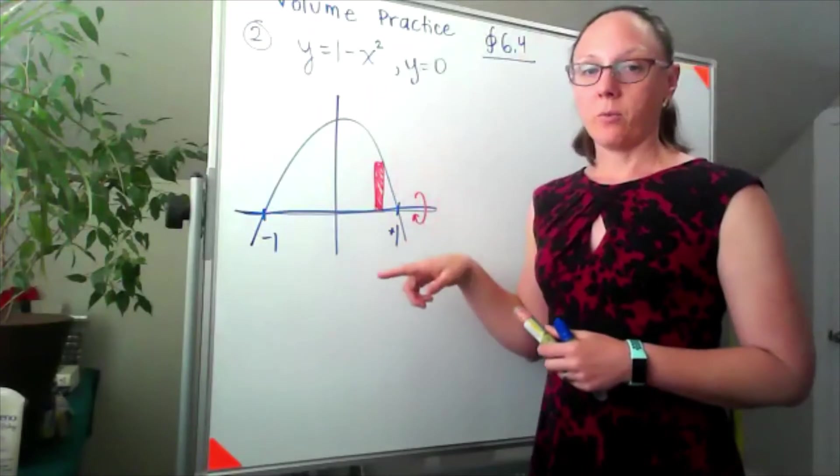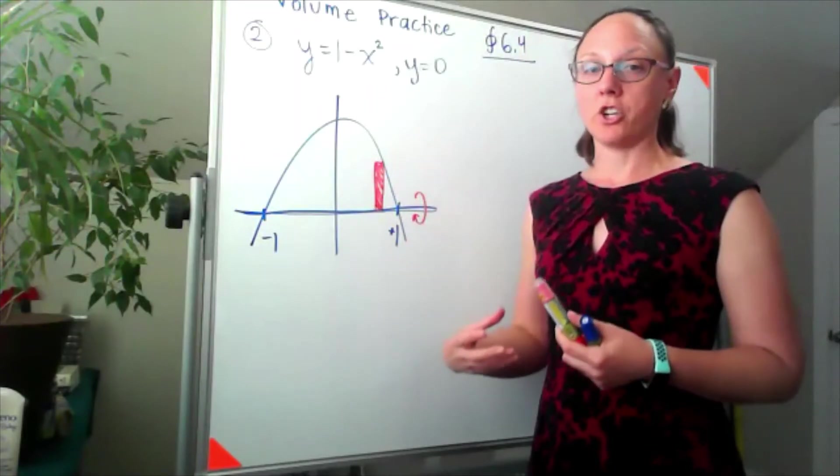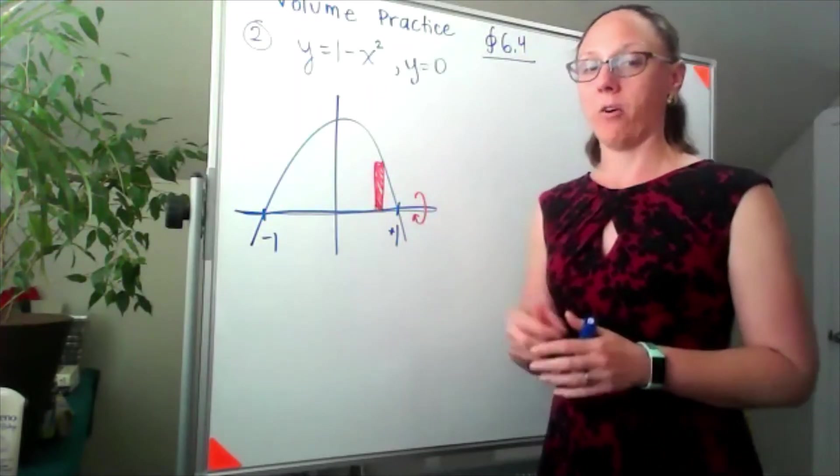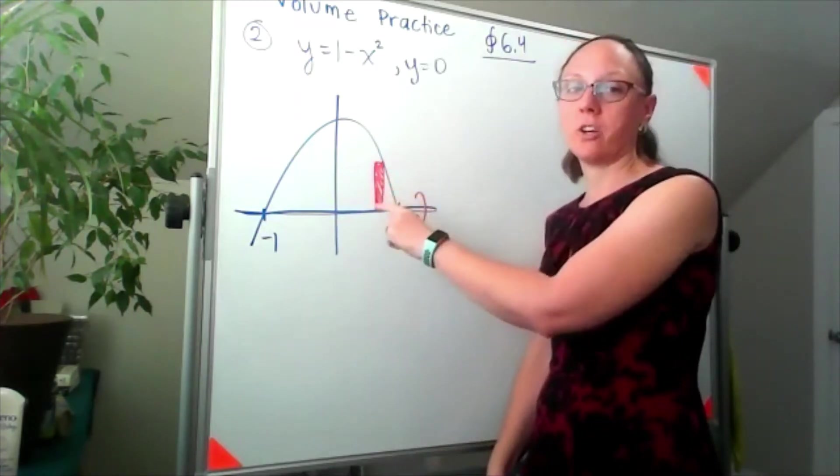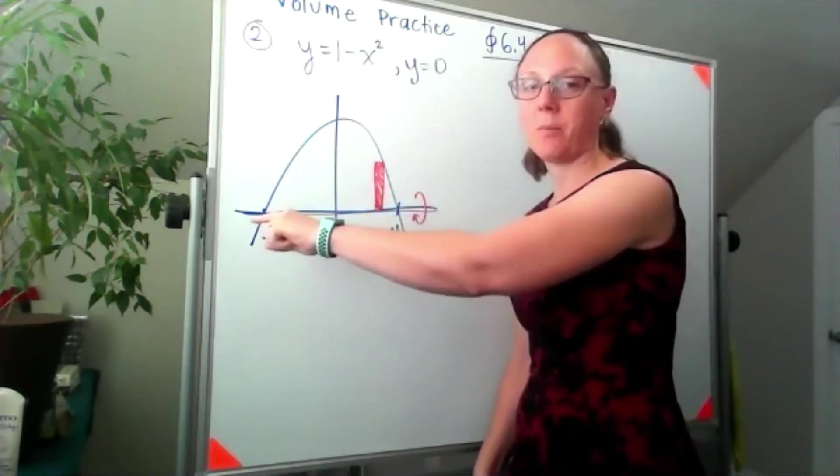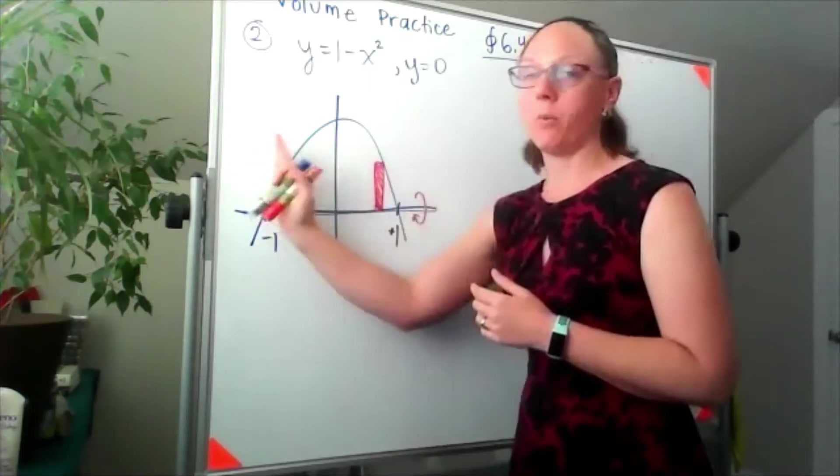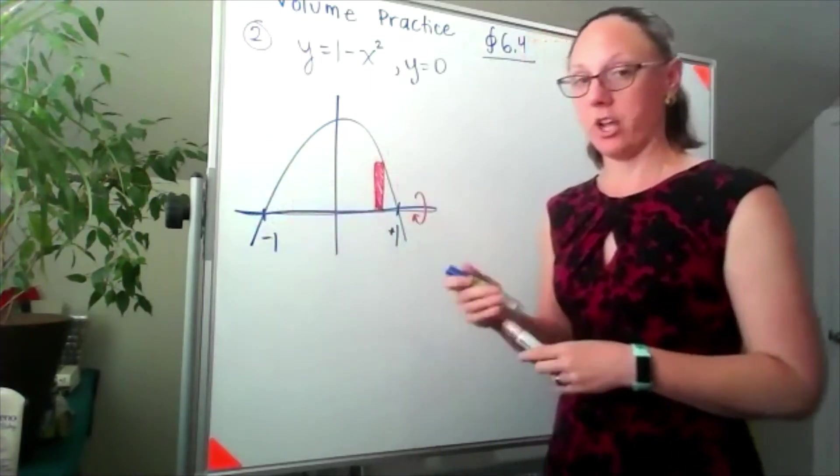When I spin that around, I get a solid shape. It's not hollowed out. And the reason that I know that is my arbitrary cross section, one side of it is touching my axis of rotation everywhere I am inside of the shape.